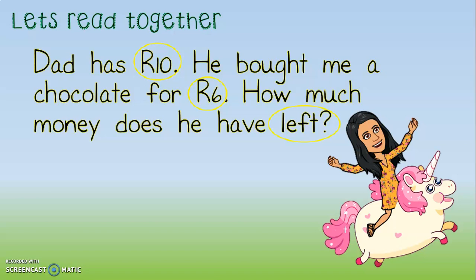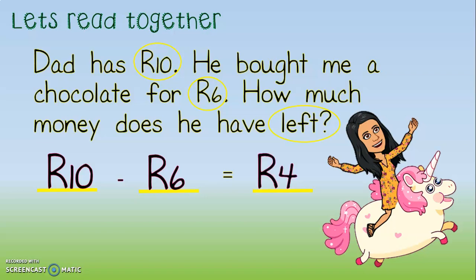Let's get cracking on our sum. What would we write? 10 rand minus 6 rand. Well done. Equals — can you do that sum for me? 10 rand minus 6 rand. How much would we have? 4 rand. And the final step: our written answer. What would we write? The question is how much money does he have left? He had 4 rand left.